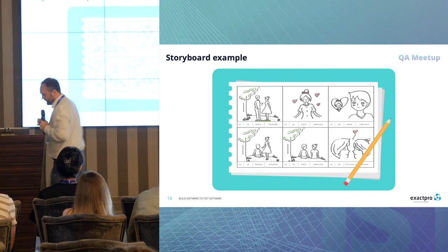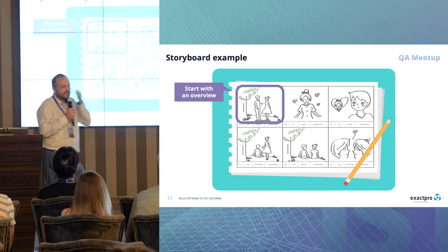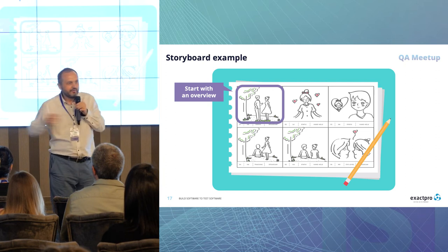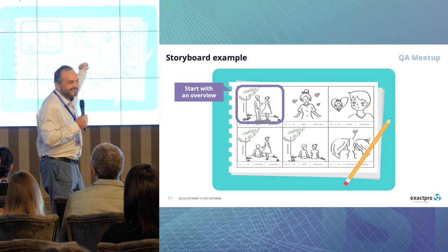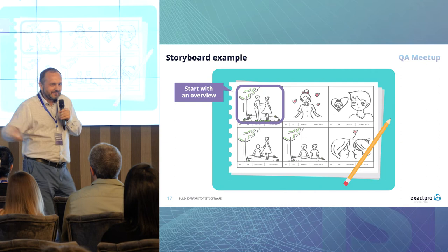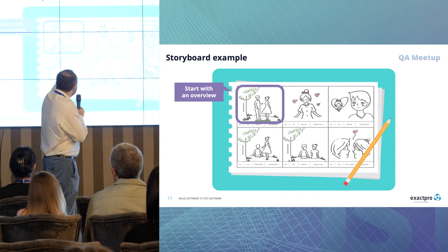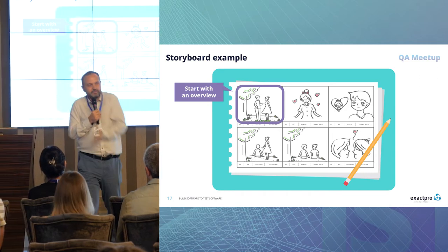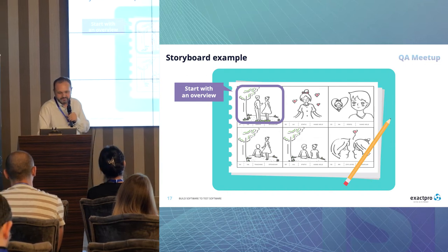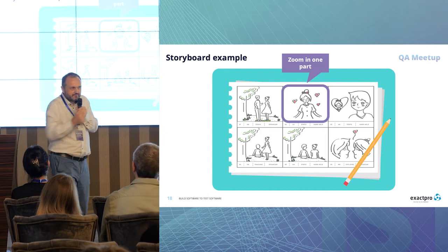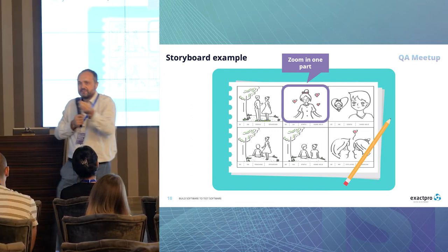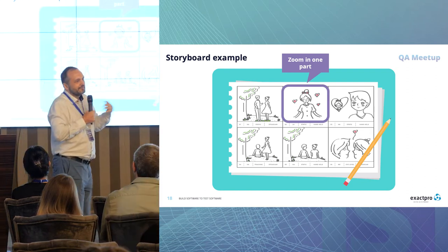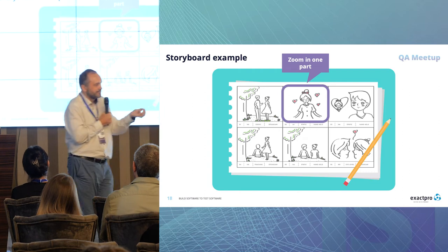Let's learn from the story. What's the structure? It starts with some overview — you introduce the main personas: the boy, the girl, maybe the tree as a separate element. You introduce every participant from a high-level context. Then you zoom in into a particular parameter — let's see the girl first. You get some thoughts, some smiles, additional information about this particular object.